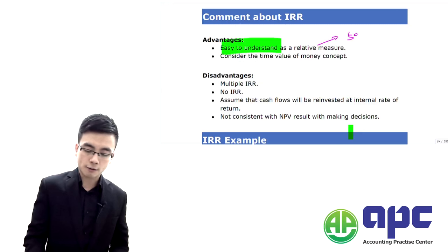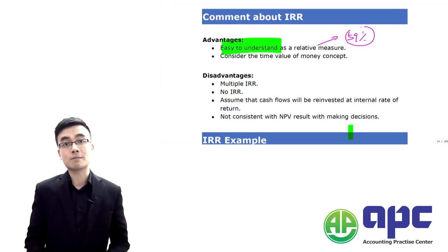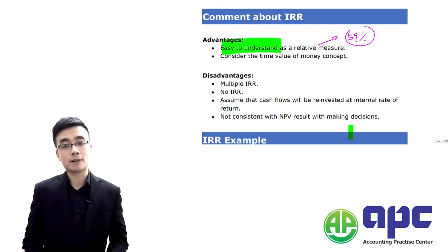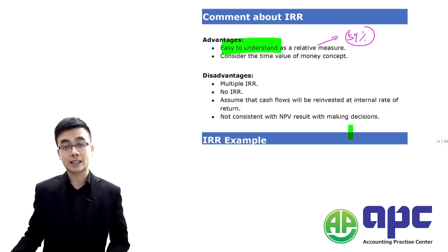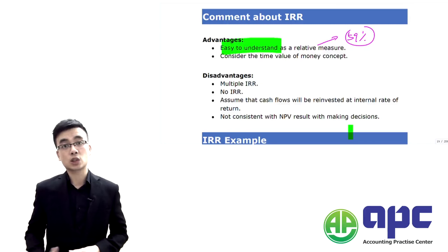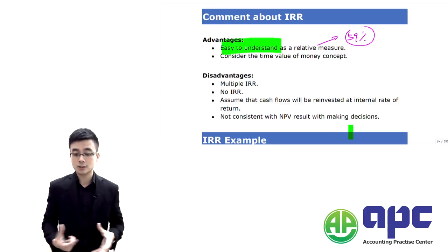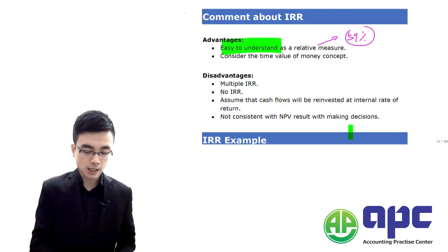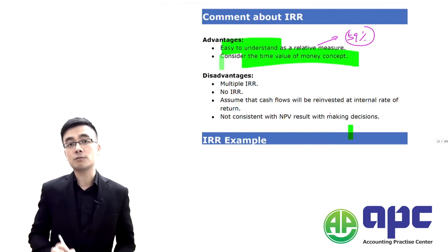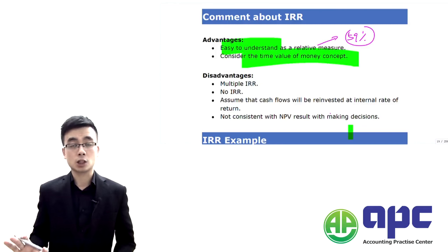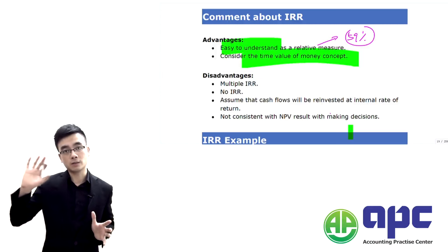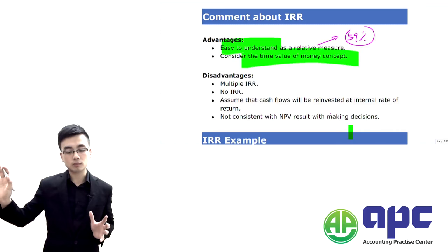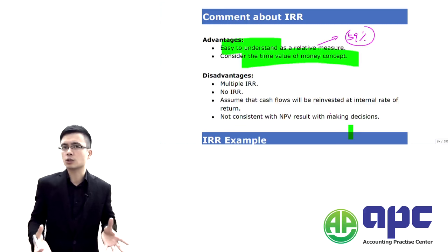Using IRR — expressing returns in percentage or relative terms — it would be easier for non-financial managers to understand. For example, from our earlier calculation, 59% as the IRR tells you that the overall return from this project is about 59% before considering the cost of financing. Additionally, it considers the time value of money concept — the value of money now is not the same as in the future. Those are the advantages.